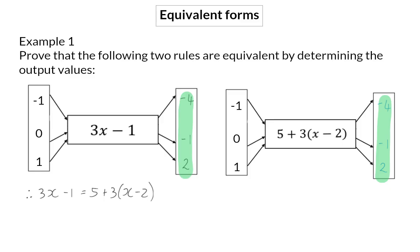You can also use algebra to prove that these two rules are equivalent. If we take the second rule and simplify algebraically, we will first multiply in the 3 to get 3x minus 6, and when we now add up the like terms, we will end with 3x minus 1, which is exactly our first rule. Which means these two rules are equivalent.